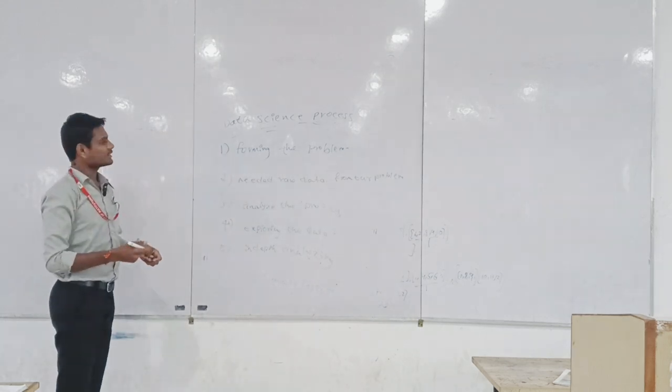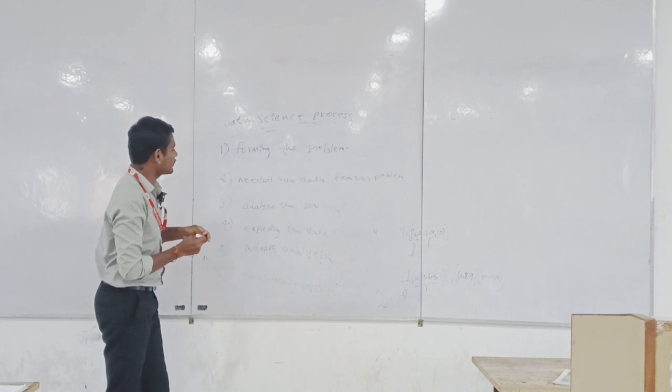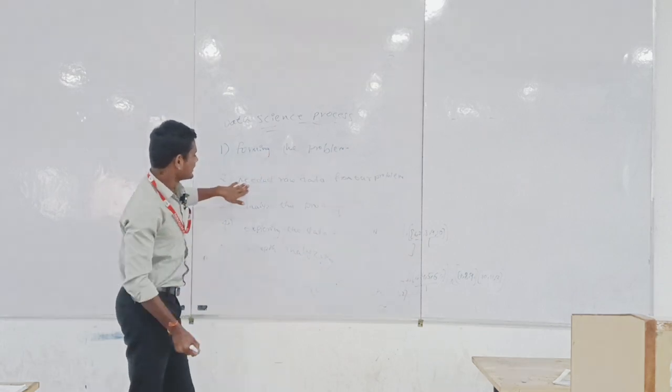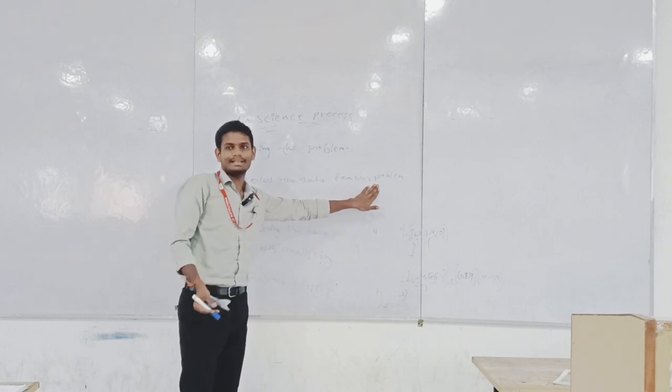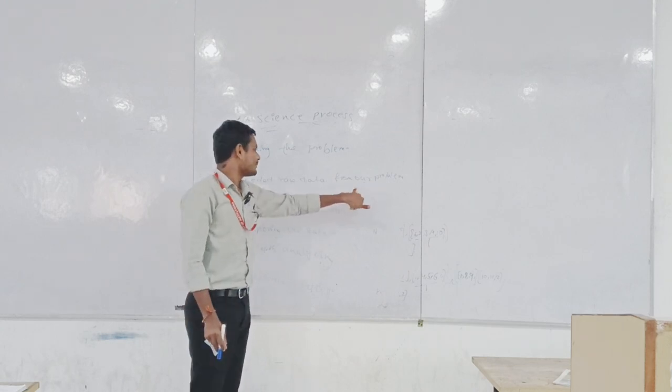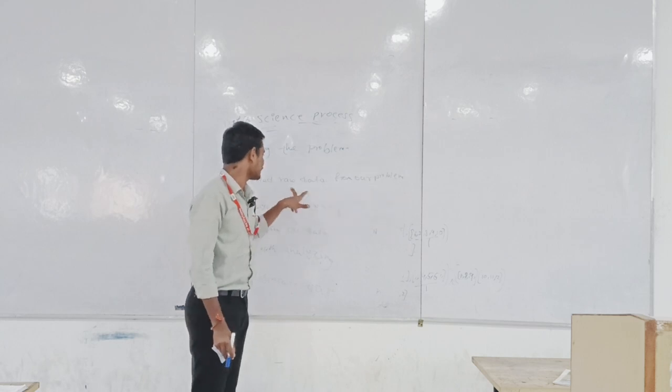These are the six steps for data science process. First, we have any problem - first, forming the problem. And second step is needed raw data from our problem. If we have any problem that has a solution, some raw data is important. So we need some raw data.